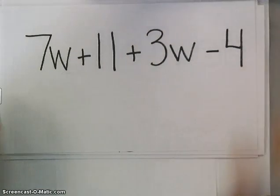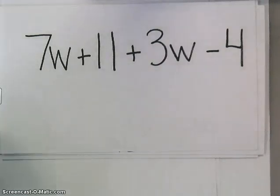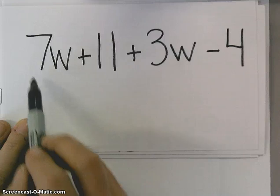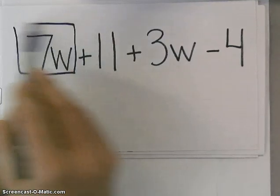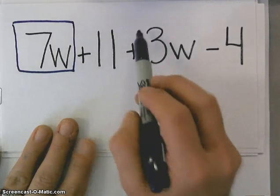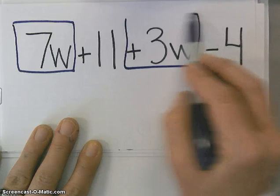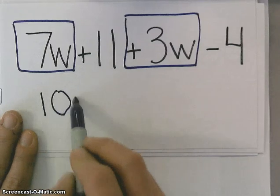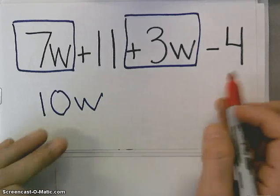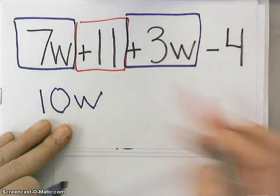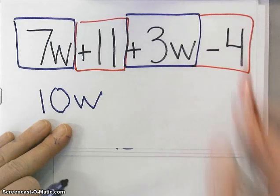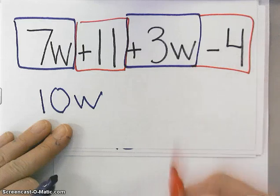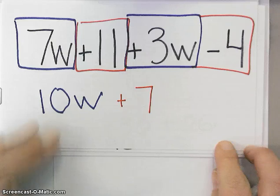So, let's look at an example that has some variables. Same idea as the smiley face or the quarter or the dime. We look for terms that have the same variable or same object. So, if I'm looking here, I have my term 7w. And then, if I were grouping it with like terms, I have my term 3w. So, I have 7w's and 3w's. I have a total of 10w's. And then, I still have my 11 and my 4. So, I have 11. And then, I have minus 4 because there's a subtraction sign in front of the 4. So, then, what's 11 minus 4? That's 7. So, my answer is 10w plus 7.